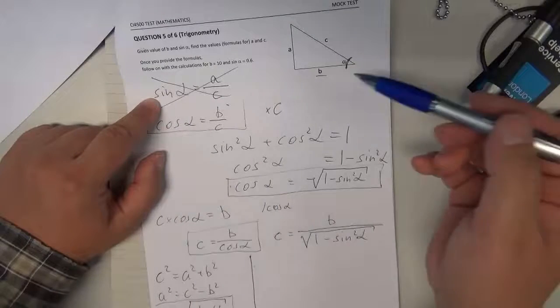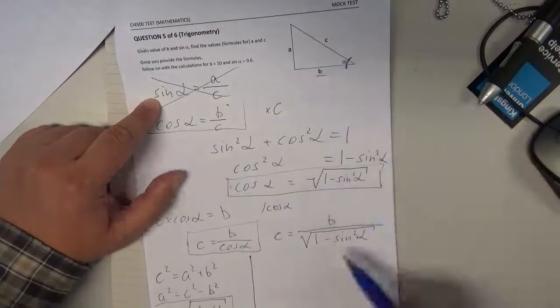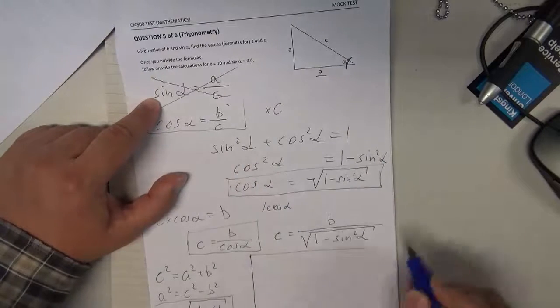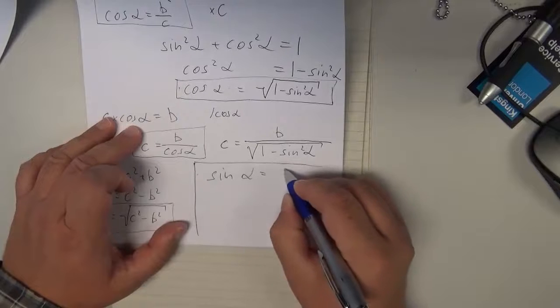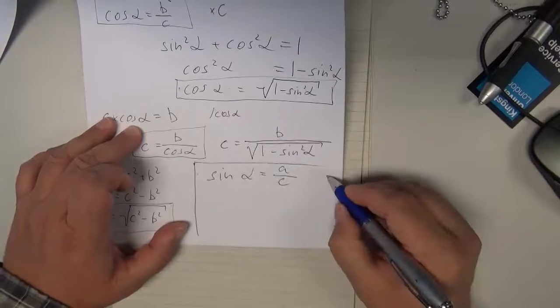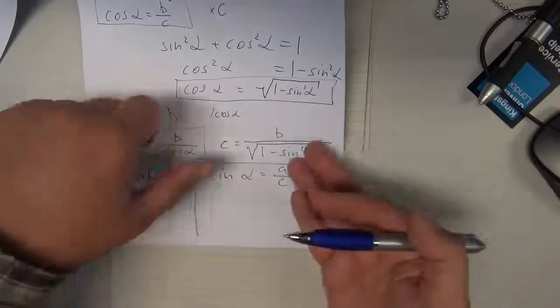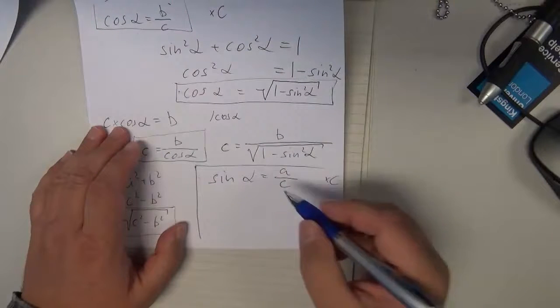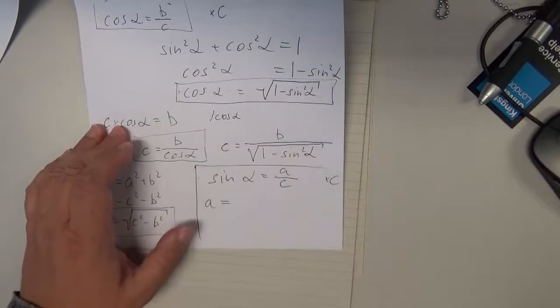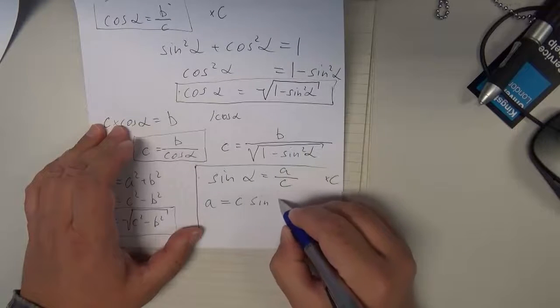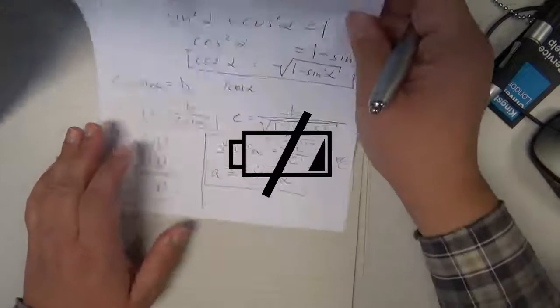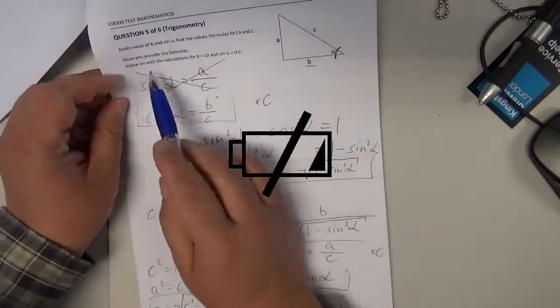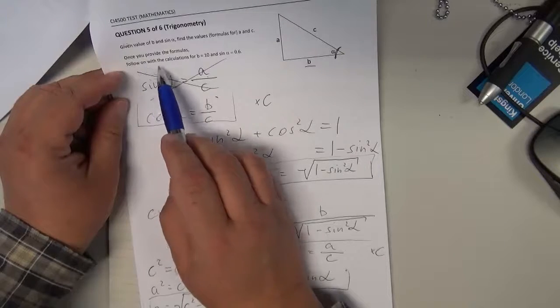Because we know the value of sine alpha. We know the value of c now. And we are looking for the value of a. So, I will use this area here to, first of all, derive this formula. Sin alpha equals a over c. I will multiply both sides by c and I will swap them around. So, I can directly write this formula for a. A equals c sin alpha. It will be a little bit easier to calculate. And the calculation is the next step because the next step of this exercise is once you provide the formulas, follow on with the calculations for b equals 10 and sin alpha equals 0.6.